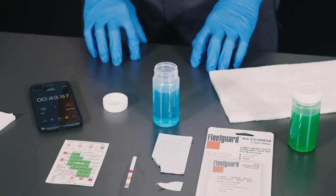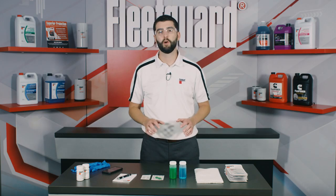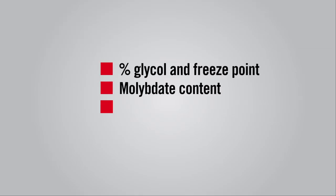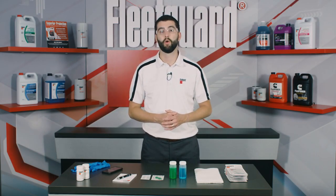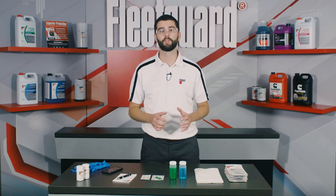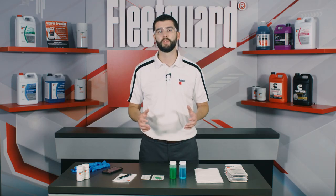After 45 seconds passes, we'll examine the results using the interpretation card. FleetGuard three-way test strips measure the percent glycol and freeze point of the coolant first, then the molybdate content, and lastly the concentration of nitrite. The results of the nitrite and molybdate readings will then be combined to provide the estimated SCA, or supplemental coolant additives, units per gallon remaining in the coolant. In other words, the overall condition of the coolant's protective qualities.